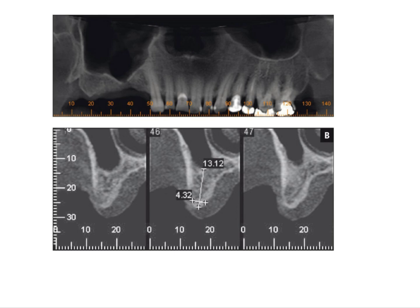Here is an example of a maxillary posterior edentulous area. You can see that the bone quality here is of D2 to D3 variety — it is not very compact and not very trabecular; it is a combination of both. You can see fine trabecular bone in some places and cortical areas as well. So this is a combination of D2 and D3 bone.